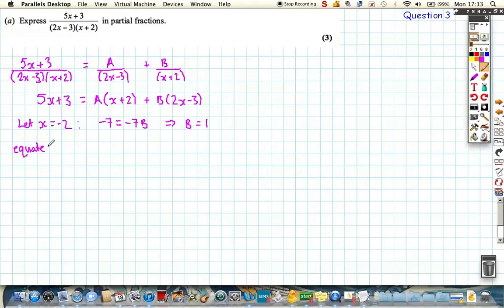Now, if we equate coefficient of x, we get on the left hand side 5, it's the only thing multiplied by x. On the right hand side we're going to get A times x, which coefficient is A. And this side we're going to get 2B. So we can use our value of B from before, so we can substitute that in, and we find that 5 is A plus 2, or we find out that A is 3.